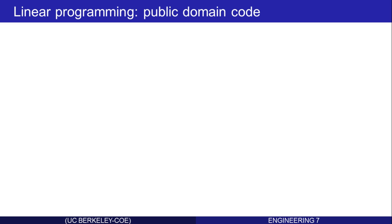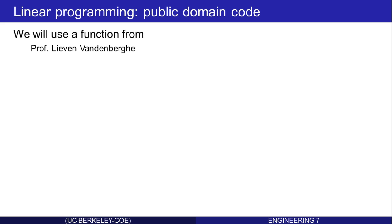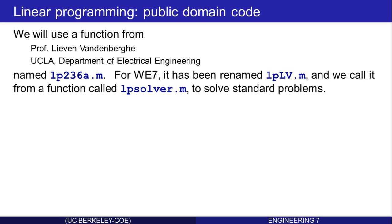Now let's talk about some public domain code which you'll use to solve linear programs. We'll use a function from Professor Lieven van der Berge in the Department of Electrical Engineering at UCLA. It's called LP236A. For this course, I've renamed it to LPLV — LV for his name — and we'll actually call it from a function called LPSolver, which we'll distribute, to solve standard problems.